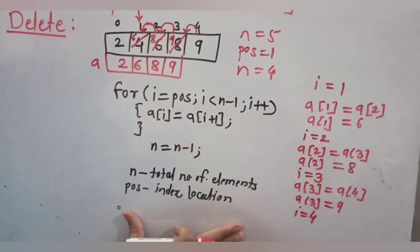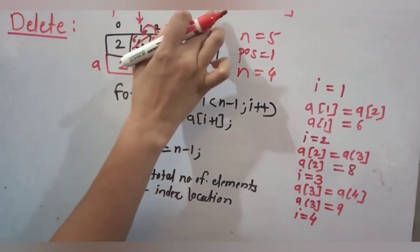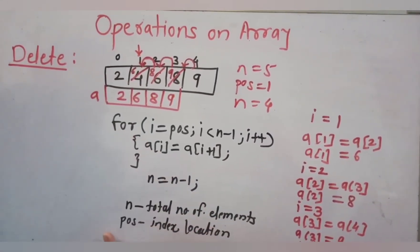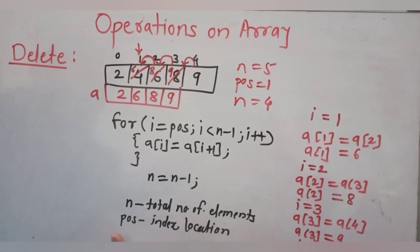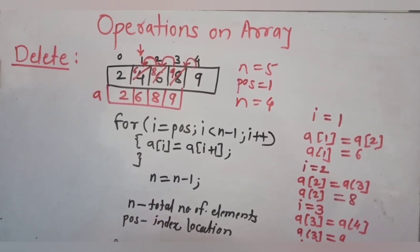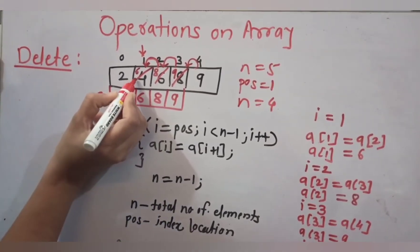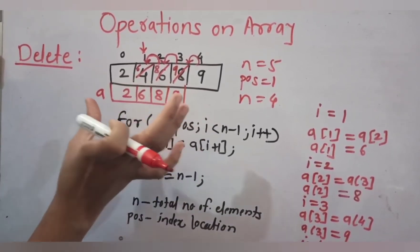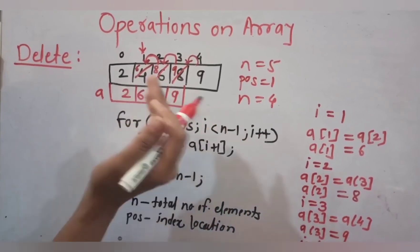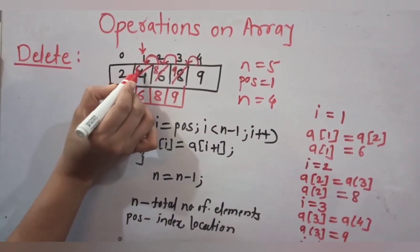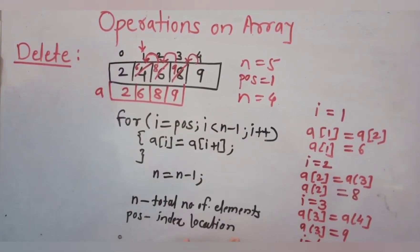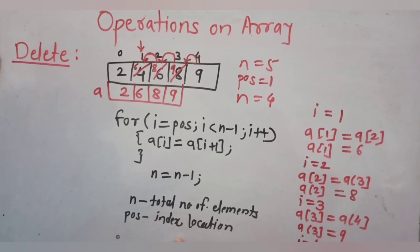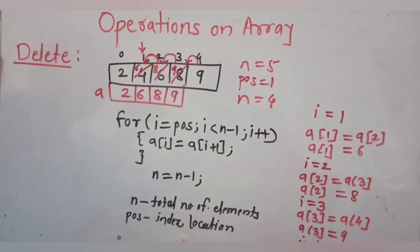This is the deletion of any particular element from the array. To summarize: deletion from an array means copying the next element in place of the deleted element, shifting every element to the left, and shrinking the array size. This is the logic behind array deletion. Hope you have understood this concept — thank you for watching.